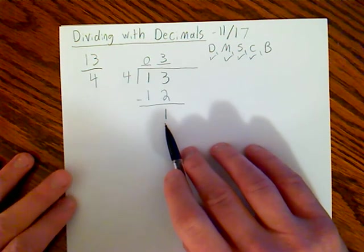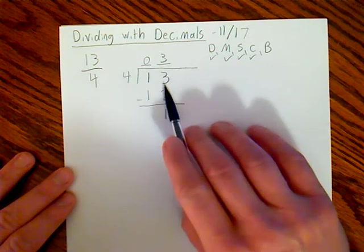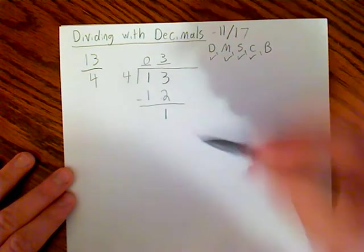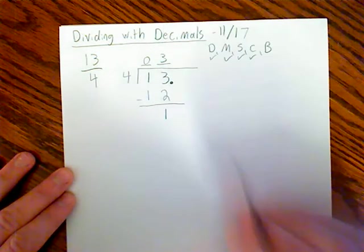But we're not dealing with remainders when we're dividing with decimals. We need to do something with that 1. So what we're going to do is add some decimal points to our dividend and our answer.